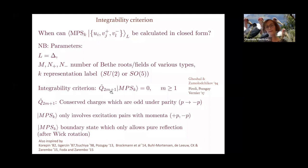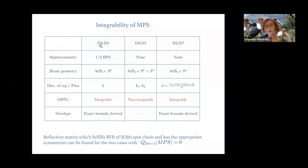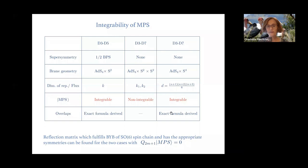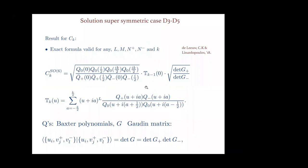Testing this integrability criterion on the three types of matrix product states shows that the supersymmetric D3-D5 probe-brane setup should be integrable, while there is a difference between the two D3-D7 setups — one should be integrable, whereas the other (the product case with two representations of SU(2)) should be non-integrable. For the integrable cases, one can find a reflection matrix fulfilling the boundary Yang-Baxter equations, and an exact formula for one-point functions can be derived.